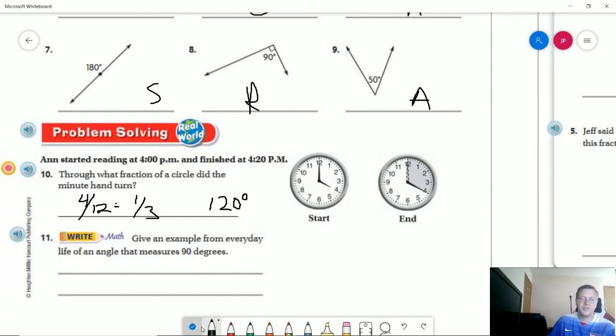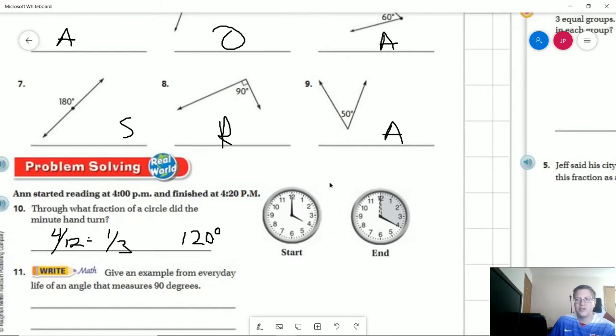So those are the different ways that we could have that. You could say that it could be 4/12, so we could also say it would be one third because we've done that before. And then we could say it's 120 over 360 or 120 degrees.